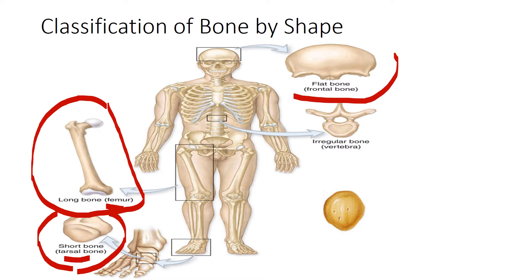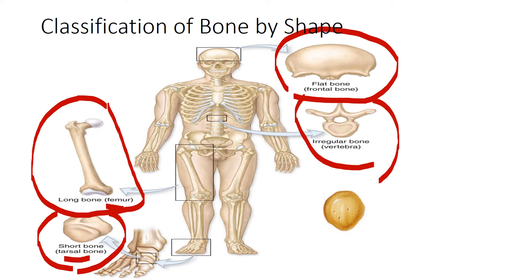The next type is a flat bone, which has thin surfaces — for example, the frontal bone of our skull. The last classification by shape is an irregular bone, which has a complex shape that doesn't fit into any of the three previous categories; an example would be the vertebrae. We also have the sesamoid bone, which is found within the knee — the patella — and has a sesamoid shape.